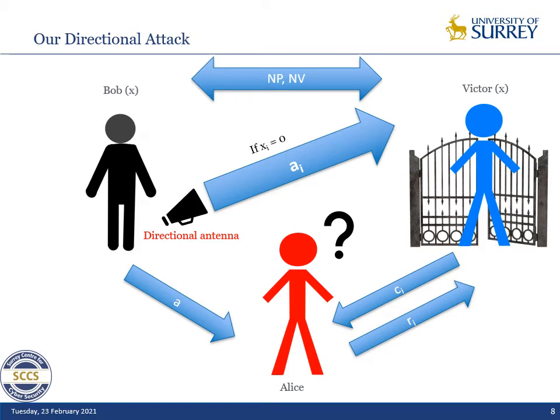In practice, it goes as follows. At the beginning we have the nonce exchanges as usual, either directly between Bob and Victor or through Alice. Bob sends A to Alice and instructs her to reply with Ai if the challenge is 0, and Ai XOR 1 if the challenge is 1, for all rounds. Because Bob will only let Alice reply for the rounds where Xi — the key bit at position i — is 1, Alice's response will always be correct for those rounds.